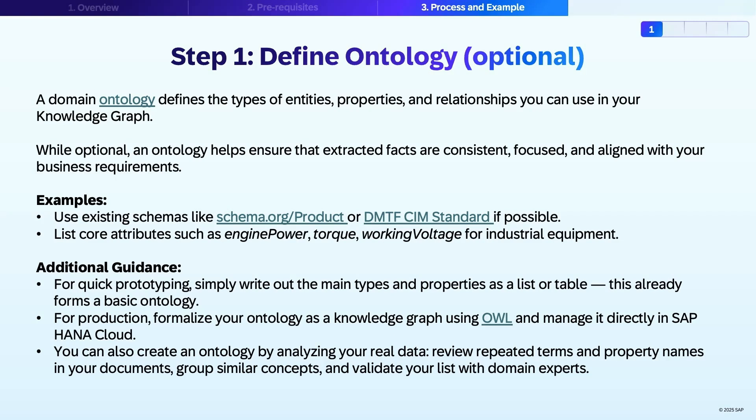This can be a simple spreadsheet. This approach will improve the quality of the information you extract and help your team focus on what matters. For more complex scenarios, you can formalize your ontology as a knowledge graph in SAP HANA Cloud. This makes it easier to maintain, extend,